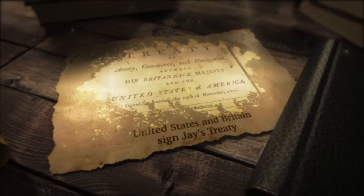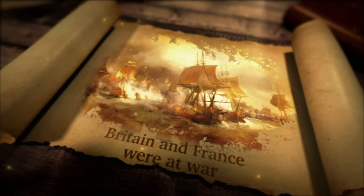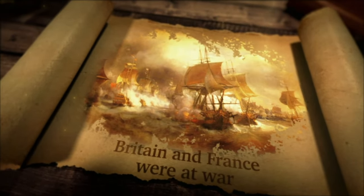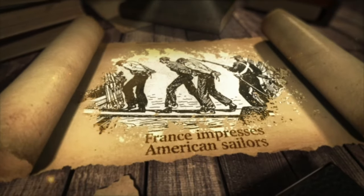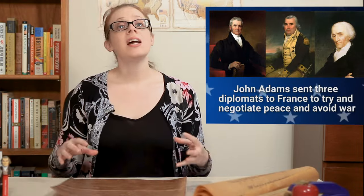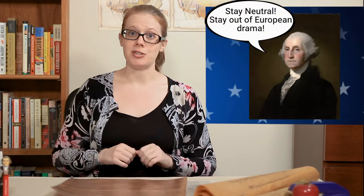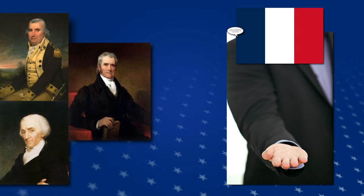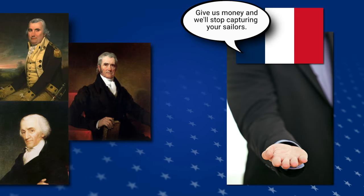This made the French angry because they viewed the treaty as the United States siding with Britain while Britain and France were at war. The U.S. claimed to be neutral, but they were signing treaties with Britain that helped trade between the two countries. So France retaliated by impressing American sailors. John Adams sent three diplomats to France to try and negotiate peace and avoid war, following Washington's advice to stay neutral and stay out of affairs in Europe. During the meeting, the French diplomats demanded a bribe from the Americans to stop the impressment of sailors.